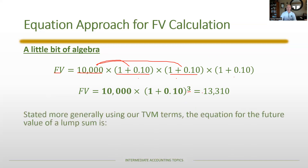We can generalize that equation: the $10,000 is the present value (PV), the 10% is the periodic interest rate (i), and the 3 is the number of periods (n). The general form FV = PV × (1 + i)^n can be applied to any future value calculation. Given a present value, an interest rate, and a number of periods, you need to be able to apply this equation and calculate the future value.